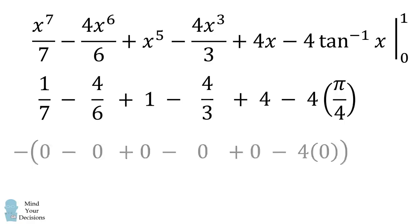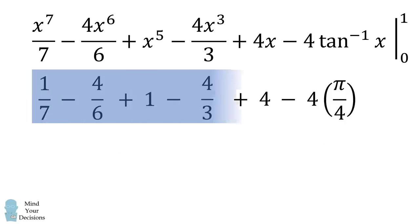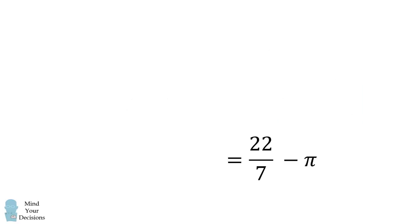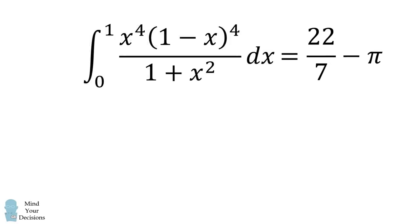We now need to simplify this. We'll take a look at the rational terms. We end up simplifying this to be 3 plus 1 over 7, and that's equal to 22 over 7. We then want to simplify the following term, and it will be equal to negative pi. Thus, we have shown that the original integral is equal to 22 over 7 minus pi. That's part 1 of the question.